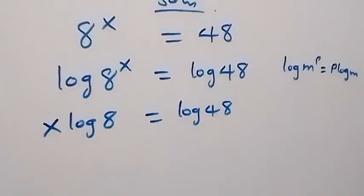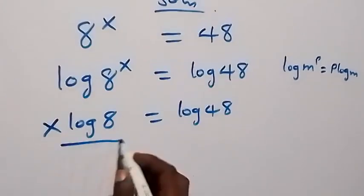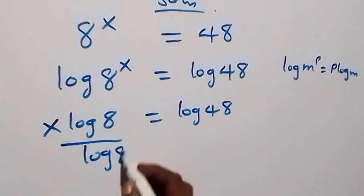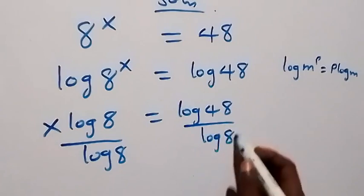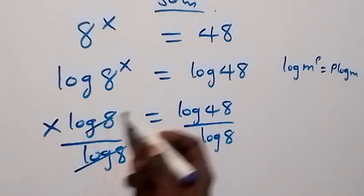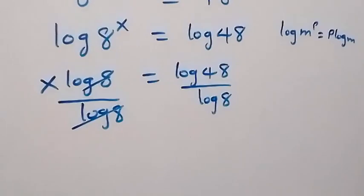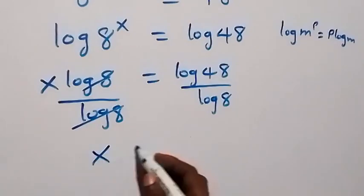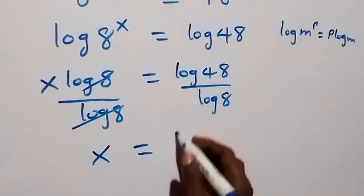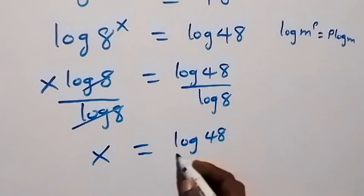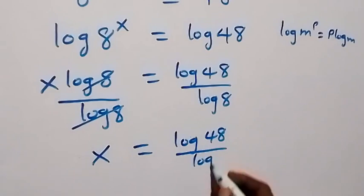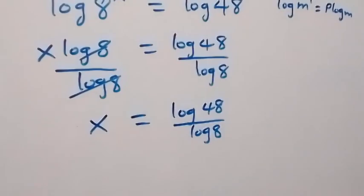Now from here we can divide both sides by log 8 — divide by log 8 here and also divide by log 8 here. The log 8 cancels out and we are left with x equals to log 48 over log 8. We can also simplify this further by writing log 48.